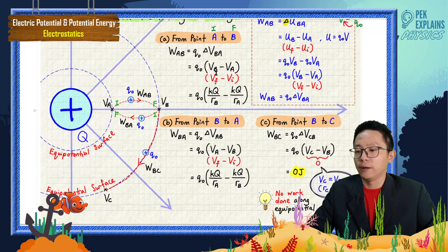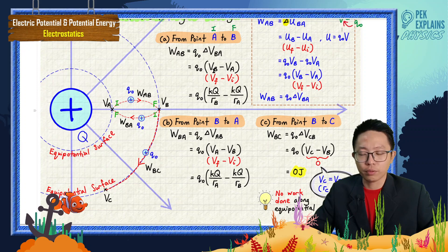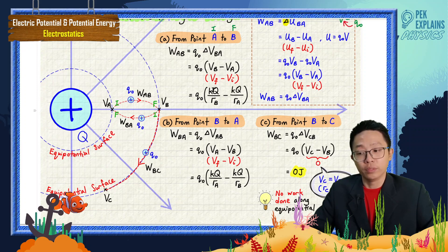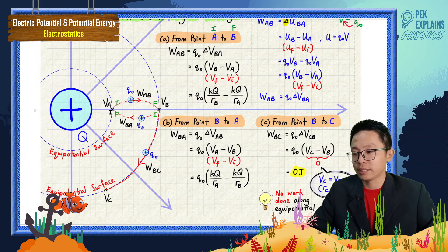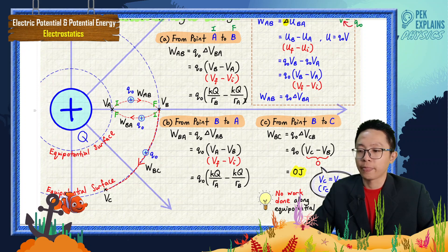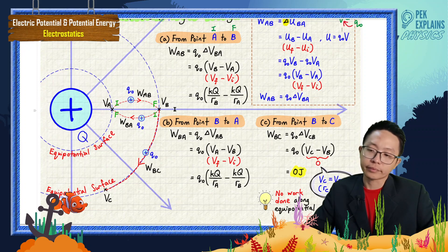Now we need to find V_b and V_a. The formula for electric potential is kq/r. V_b uses distance r_b and V_a uses distance r_a — both referring to the same point charge Q. The only difference between V_a and V_b is the distance: r_a is nearer (shorter) and r_b is further away (longer).